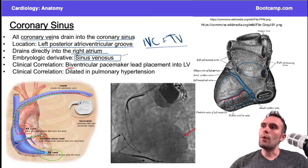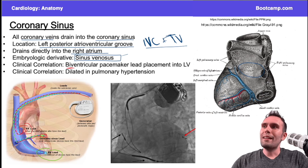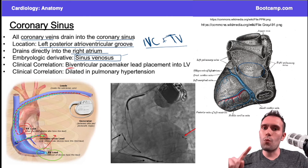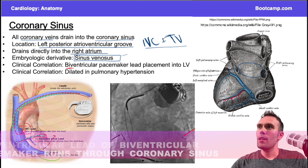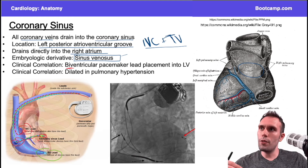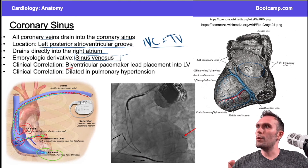You get the third lead to the left ventricle by going through the coronary sinus, which is located in the right atrium near the inferior vena cava and the tricuspid valve. You then run it through the left ventricular venous tributaries to reach the left ventricle. Going from the right ventricle up through the pulmonary artery is the Swan-Ganz catheter approach — that's different from biventricular pacemaker placement.